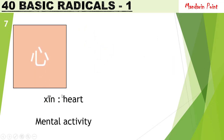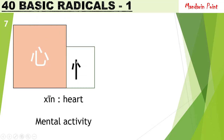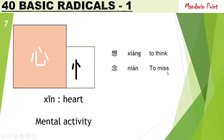Next is 心 xīn, meaning 'heart,' but it represents mental activities. It also has a short form and is widely used in many characters. For example, 想 xiǎng meaning 'to think' — and you know thinking is a mental activity. Also 念 niàn meaning 'to miss' — again a mental activity. So xīn represents mental activities.